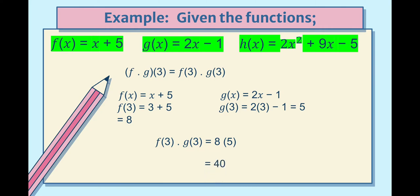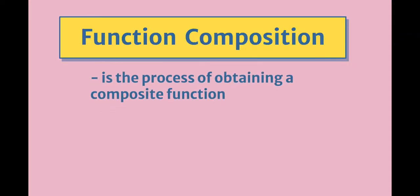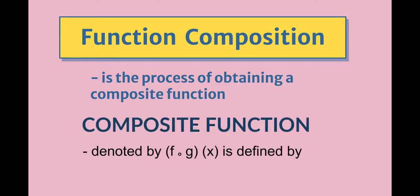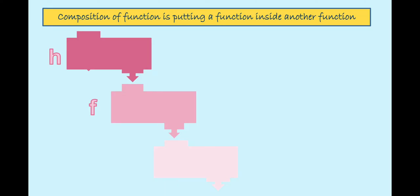For function composition, it is the process of obtaining a composite function. It is denoted by the small circle symbol, read as 'composed of': (f ∘ g)(x), also written as f(g(x)). Composition of functions means putting a function inside another function.